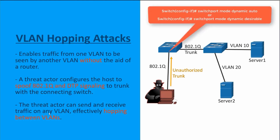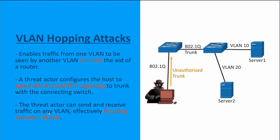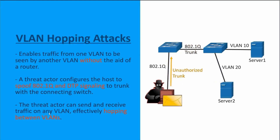This would be the modes of dynamic auto or dynamic desirable on the switch ports. The threat actor is going to configure the host to spoof those 802.1Q signaling and those DTP messages so that the trunk will form between the host and the switch. With a successful trunk established, they're going to be able to send and receive traffic on any virtual local area network, effectively hopping between any VLANs that they want to connect through.